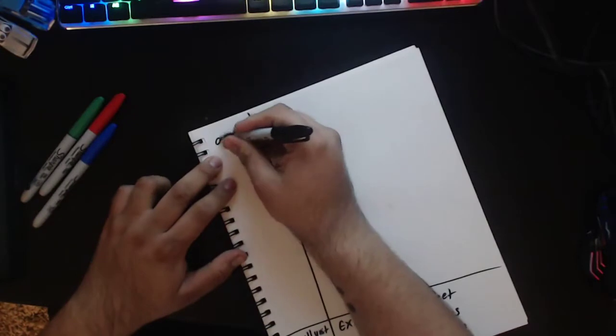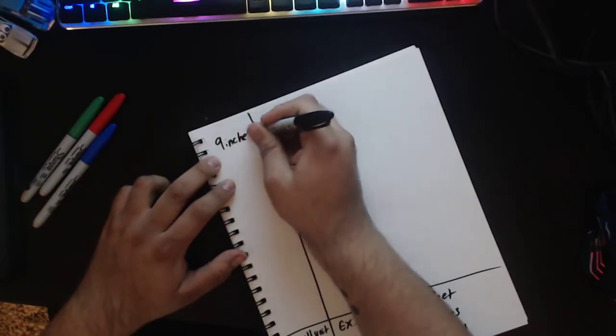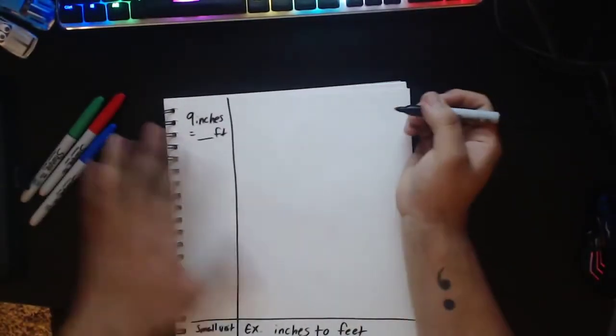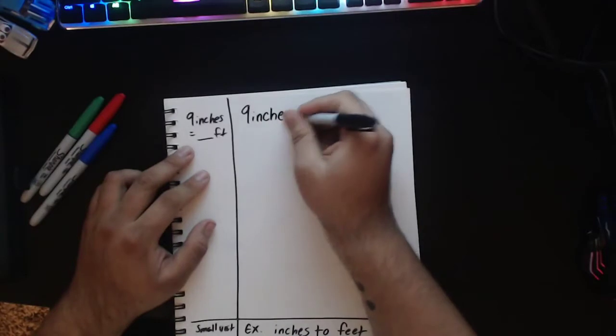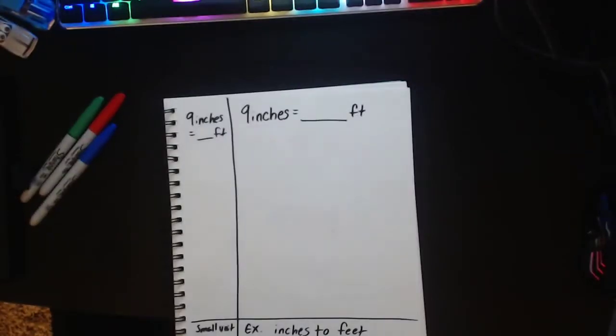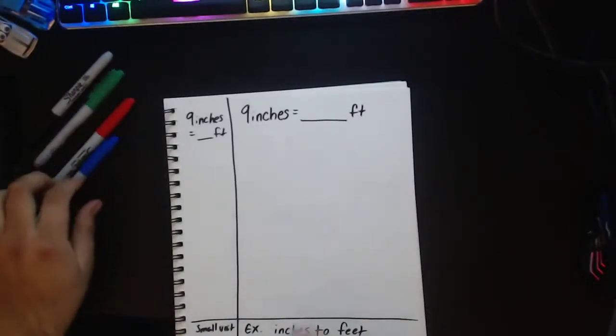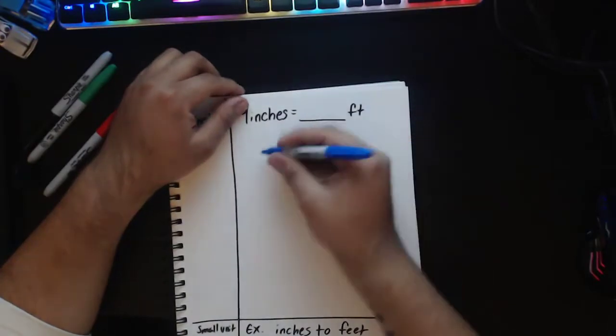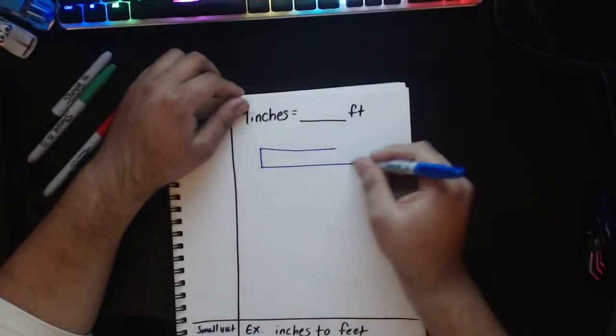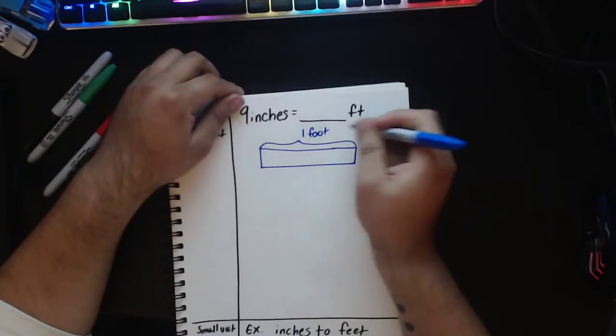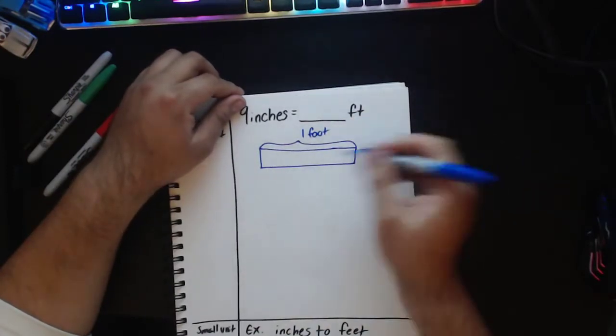Our first problem will be 9 inches to a foot. So I wrote my problem here. Now I'm going to rewrite it on this side. So I'm going to write 9 inches equals blank feet or foot. Now that I've rewrote my problem, I'm going to go with my next step, which will be in blue. And what's important to know is that I'm going to start off with a tape diagram. And I'm going to label that tape diagram as my 1 foot.